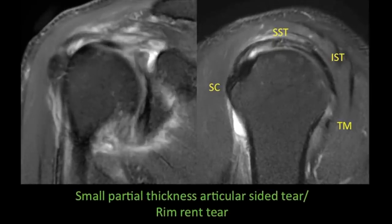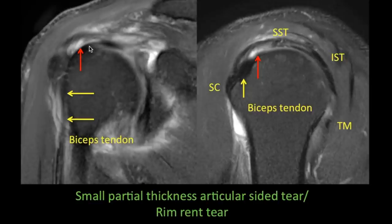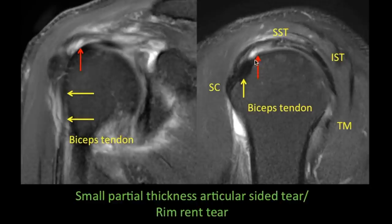One more important tear is the rim-rent tear — small partial thickness articular sided tears commonly found in the anterior-most fibers of the supraspinatus tendon. This is a common site for partial thickness tears to begin, and if missed they can progress to large partial thickness or even full thickness tears. These tears can be difficult to identify on coronal images and are best seen on sagittal images, where you can visualize the subscapularis tendon, the biceps tendon, and the rim-rent tear just adjacent to the biceps tendon.